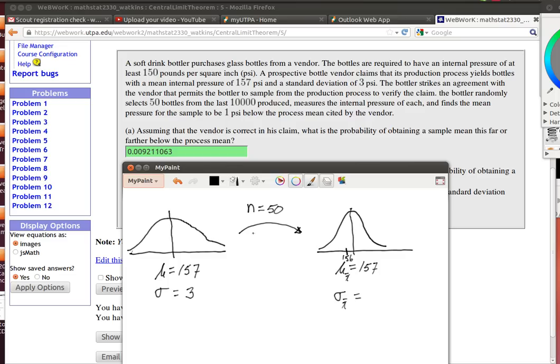But the theory says, the central limit theorem says, that if we looked at all the possible samples of size 50, if the mean was really 157 and the standard deviation was 3, then the distribution of all of those sample means would have a mean of 157 and it would have a standard deviation of 3 divided by the square root of 50.